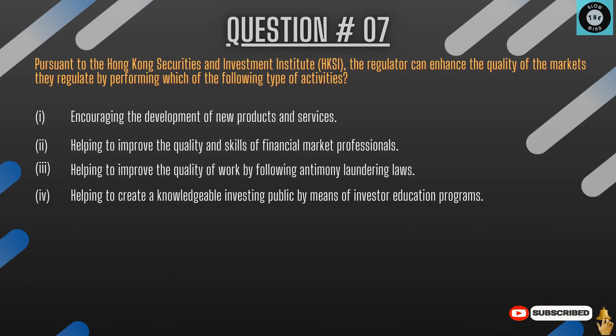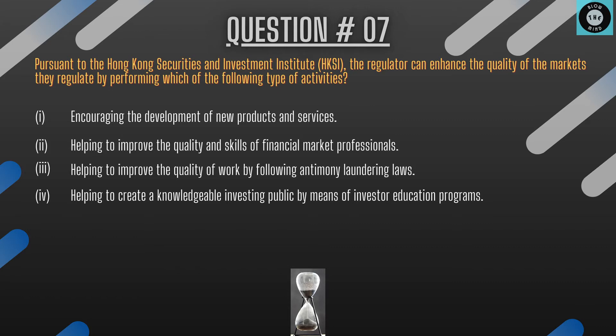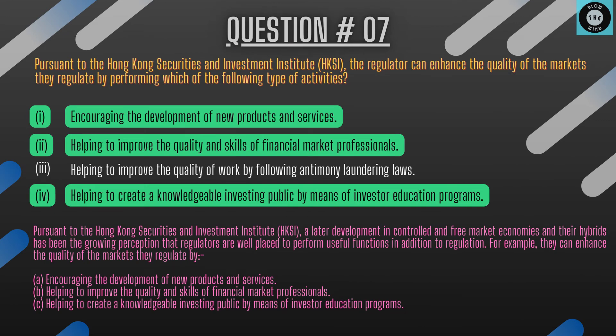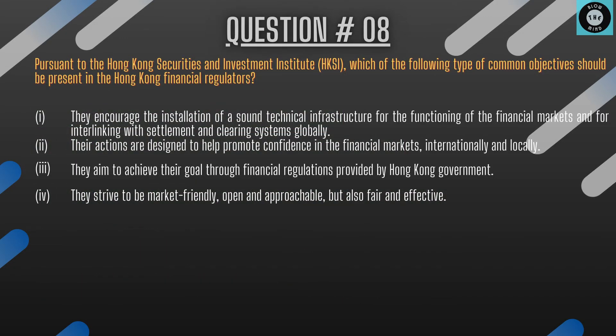The question is: pursuant to the Hong Kong Securities and Investment Institute, the regulator can enhance the quality of the markets they regulate by performing which of the following activities? The explanation: regulators are well placed to perform useful functions in addition to regulation. They can enhance the quality of the markets they regulate by: a) encouraging the development of new products and services, b) helping to improve the quality and skills of financial market professionals, c) helping to create a knowledgeable investing public by means of investor education programs.